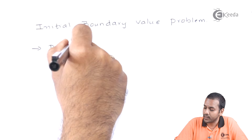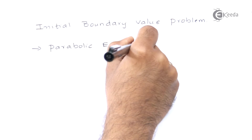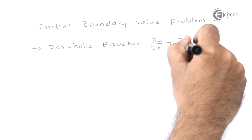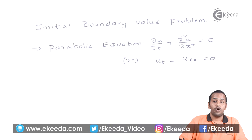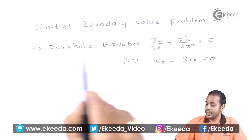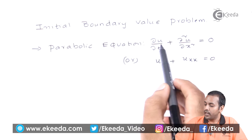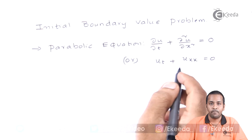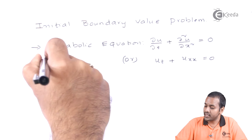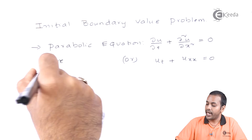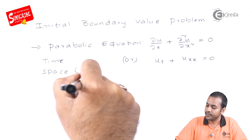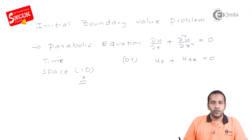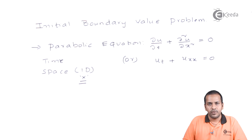I can take a parabolic equation as an example. As you can clearly see, this is a parabolic equation. It has two dimensions: one is time and another one is space in 1D, that is x.